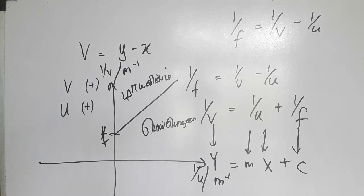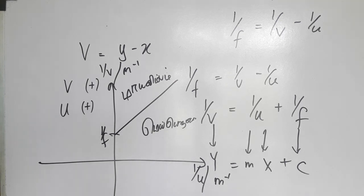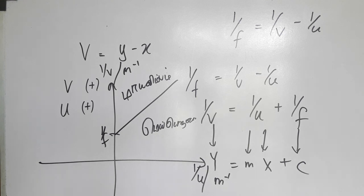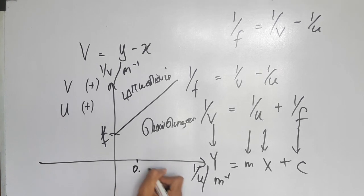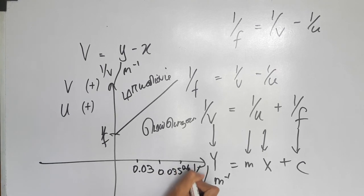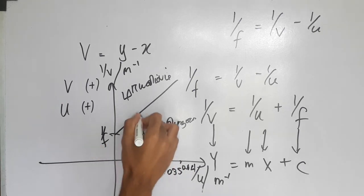1 over u will be 0.04. So if we are 0.04, we will write the u in the same way. We will write the u in the same way. So we will write the u is 0.035. We will write the u over u. How do you write the u? 1 over u is 0.03. We will write the u. First, 0.03. Now, 0.035. Then, 0.04.